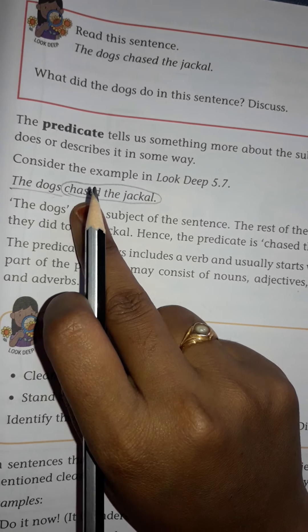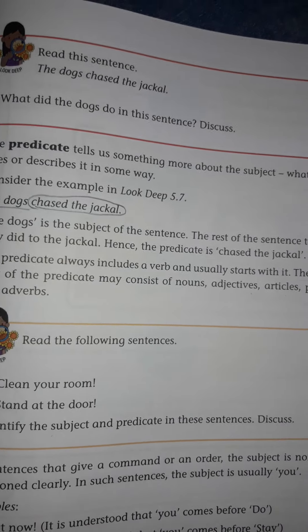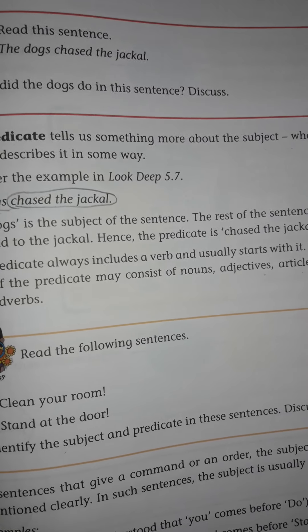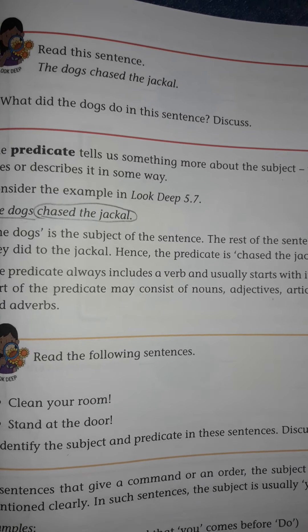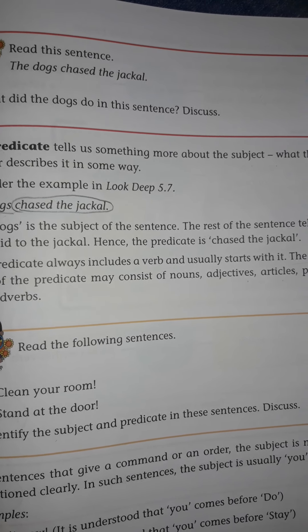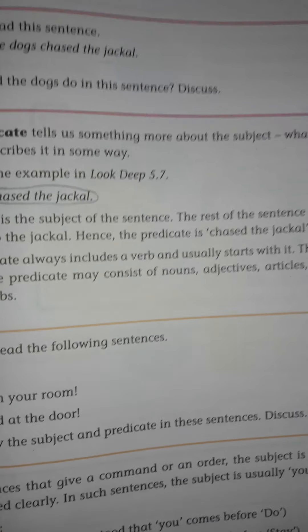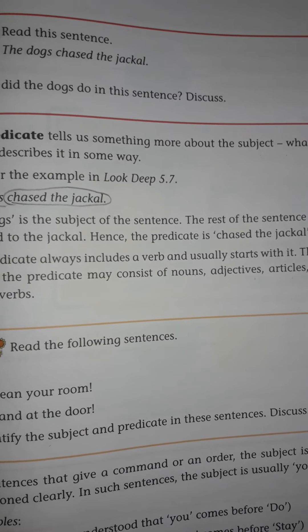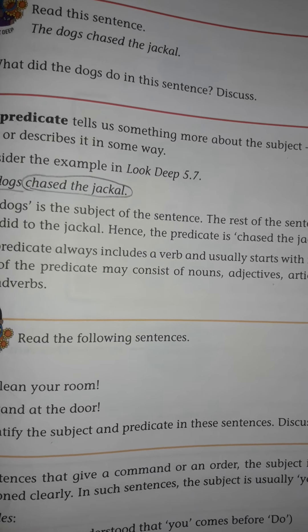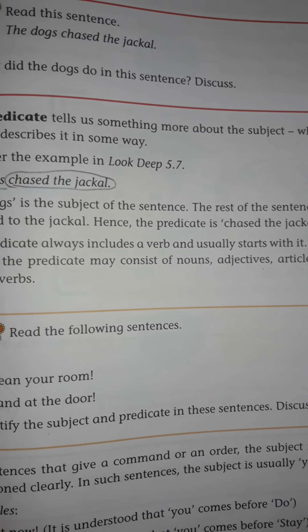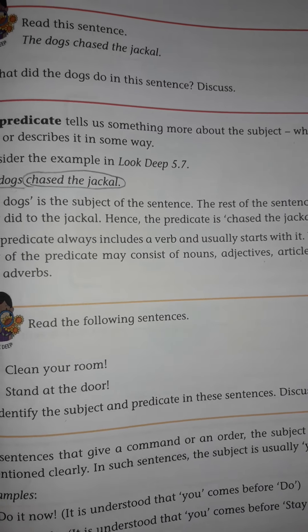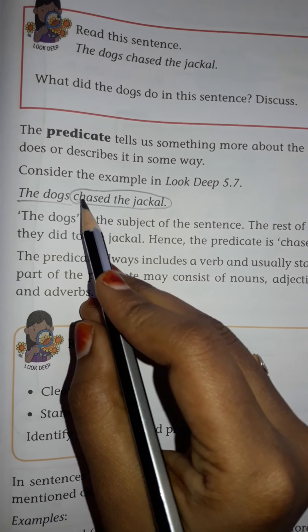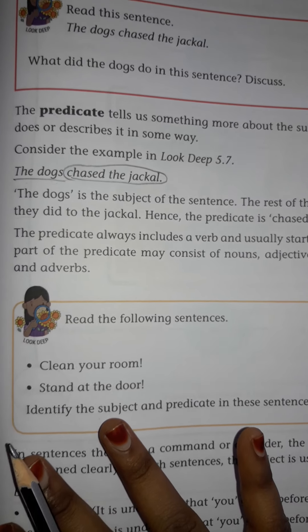So after the verb, the remaining part may be a noun, adjective, article, preposition, or adverb. The sentence will mostly start with the subject. The remaining part — what the subject is doing or what describes the subject — that part is the predicate. And this predicate includes a verb, and usually starts with it.